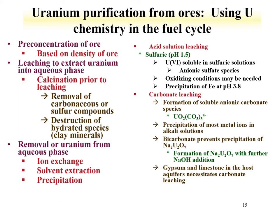The uranium chemistry described can be used for separating uranium from ores and making compounds useful to the fuel cycle. The initial concentration of the ore is based upon density. Once a phase with relatively high uranium concentration is obtained, uranium can be leached into an aqueous phase and removed from other metal ions by ion exchange, solvent extraction, or precipitation. There are two main routes: an acid leach using sulfuric acid at pH 1.5, forming anionic uranyl sulfate species that can be separated by anion exchange, with oxidizing agents used as needed and iron removed by precipitation near pH 4.